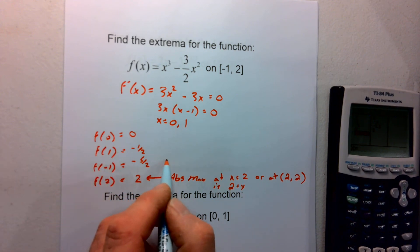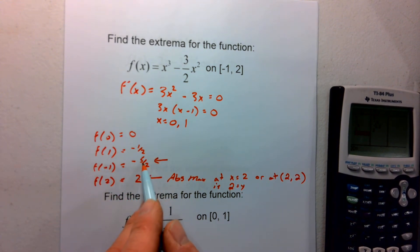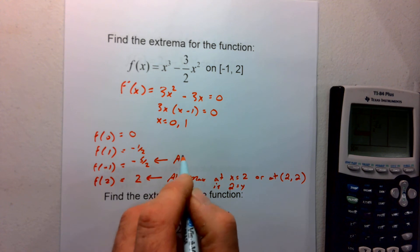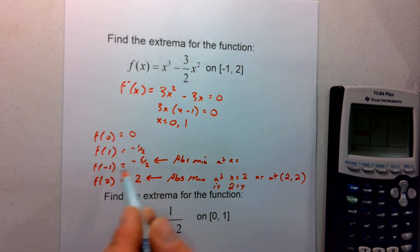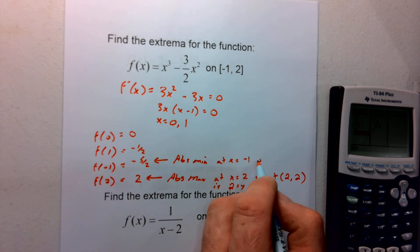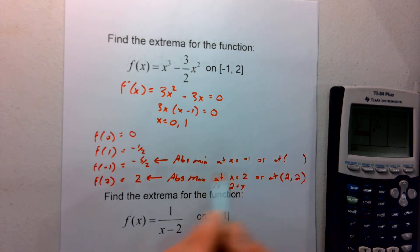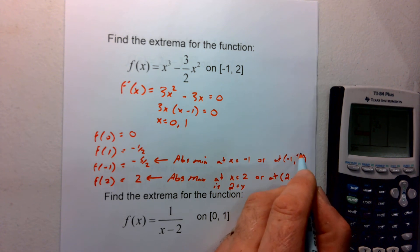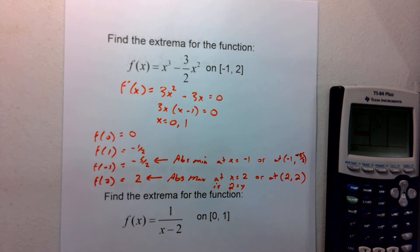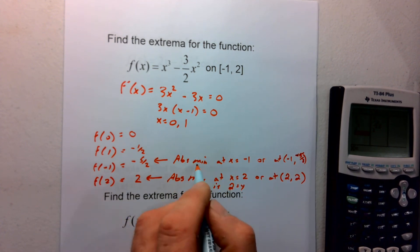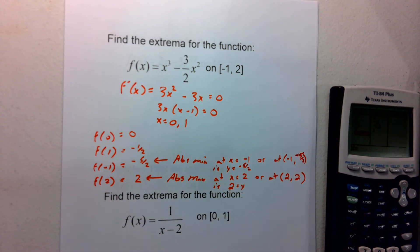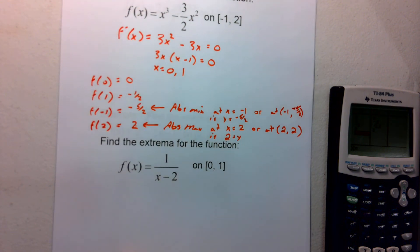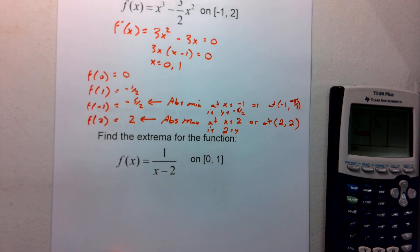There are a lot of different ways to present your answer, so be careful about the verbiage of the question. You can say the absolute maximum occurs at x equals 2, or at the point (2, 2), or that the absolute maximum is y equals 2. Our minimum is going to occur at the lowest point, which is negative 5/2. So we have an absolute minimum at x equals negative 1, or at the point (negative 1, negative 5/2), or the absolute minimum is y equals negative 5/2.